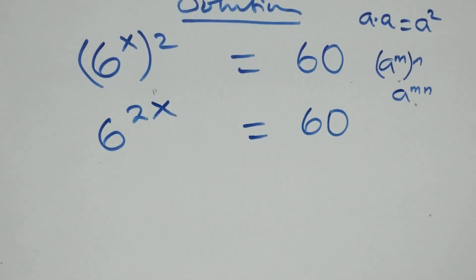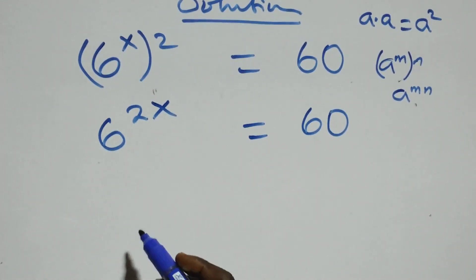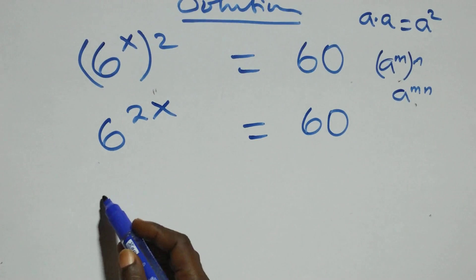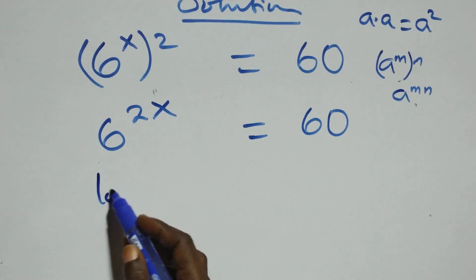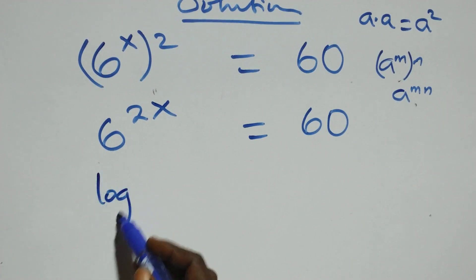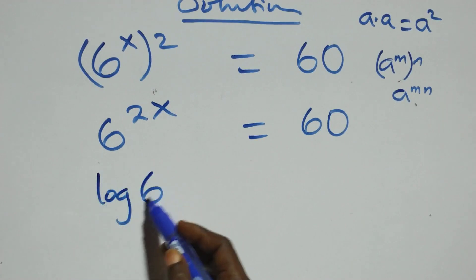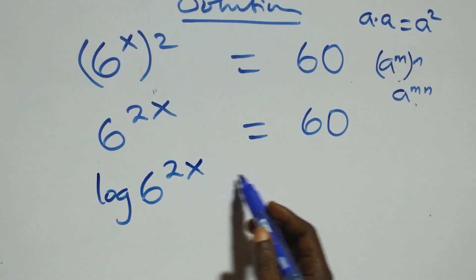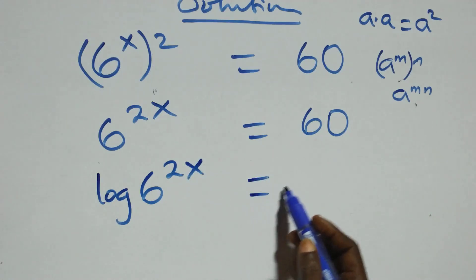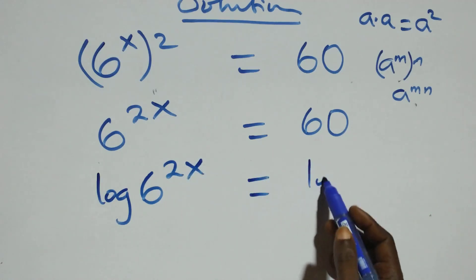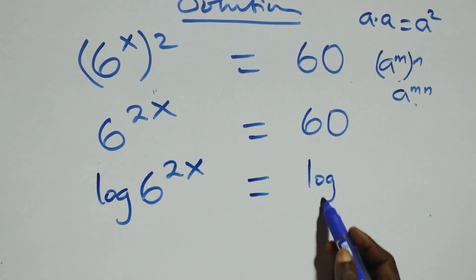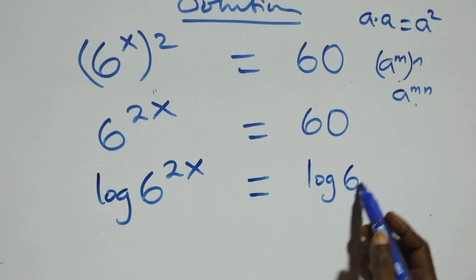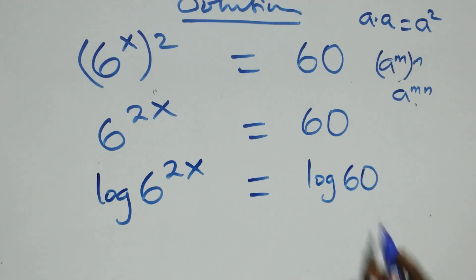At this next step here, we take the log on both sides. We have log of 6 raised to power 2x equals to log 60 from here.